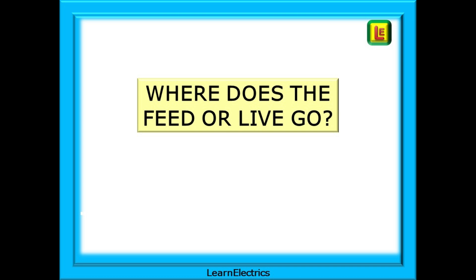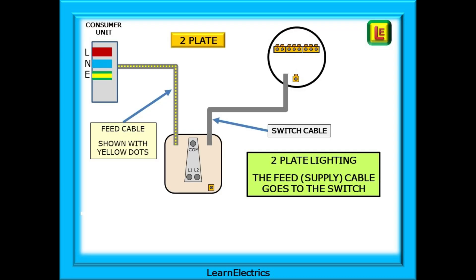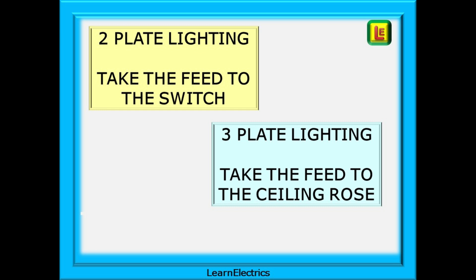Where does the feed or live go after it leaves the consumer unit? This is the big difference between two-plate and three-plate lighting. In this video, just for illustration purposes, a feed or live supply cable will be shown as grey twin-and-earth with yellow dots. With a two-plate lighting circuit, the feed cable comes from the consumer unit and goes to the switch, and the switch cable goes from the switch to the ceiling rose. With a three-plate lighting circuit, the feed cable goes to the ceiling rose, and the switch cable goes from the ceiling rose to the switch. Remember: with two-plate, we take the feed to the switch; with three-plate, we take the feed to the ceiling rose.